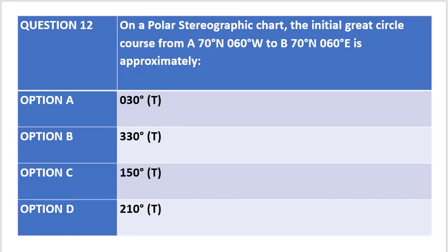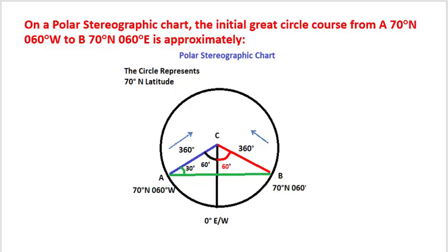...from point A which is 70 degrees north and 60 degrees west to point B which is 70 degrees north and 60 degrees east is approximately. The options are given below. So to solve this question, let us understand this diagram and what is asked.